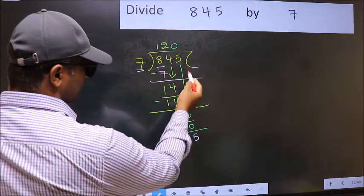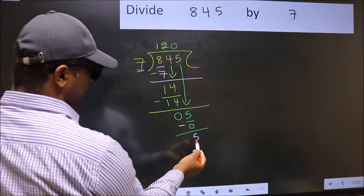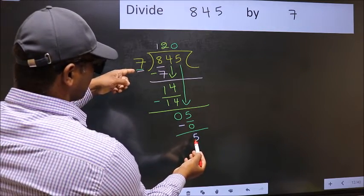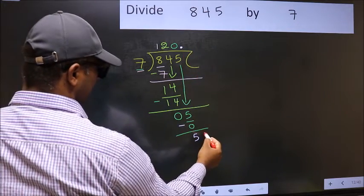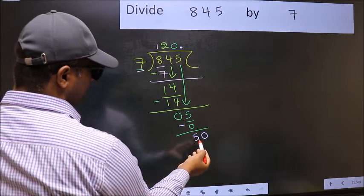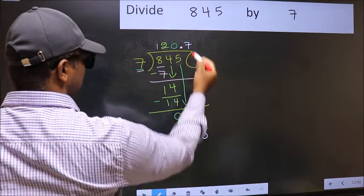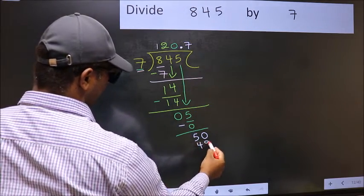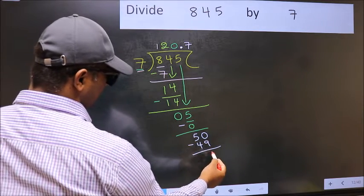Over here, we did not bring any number down. And 5 is smaller than 7. So now you can put dot and take 0. So 50. A number close to 50 in 7 table is 7 7s, 49. Now you should subtract. 50 minus 49, 1.